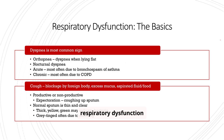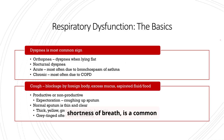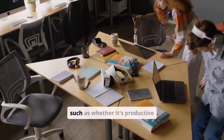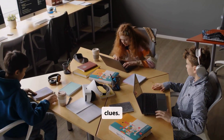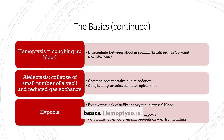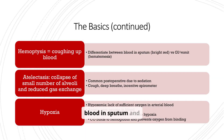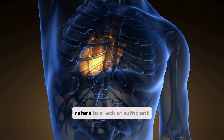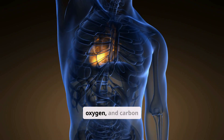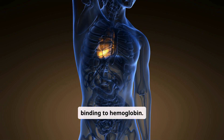Dyspnea, or shortness of breath, is a common sign of respiratory dysfunction. Cough can be caused by various factors, and its characteristics — such as whether it's productive or non-productive — can provide valuable clues. Hemoptysis is coughing up blood, and it's important to differentiate between blood in sputum and GI vomit. Atelectasis is the collapse of alveoli, often seen postoperatively. Hypoxia refers to a lack of sufficient oxygen, and carbon monoxide can cause it by binding to hemoglobin.